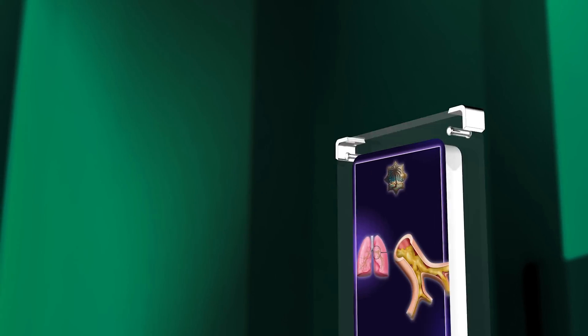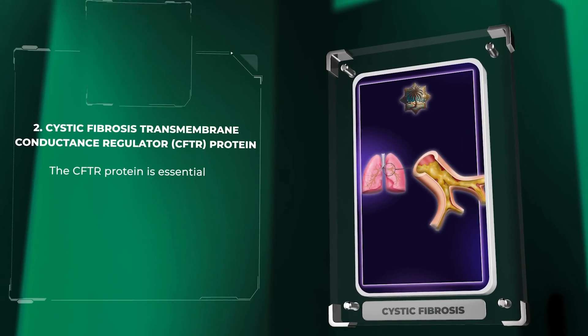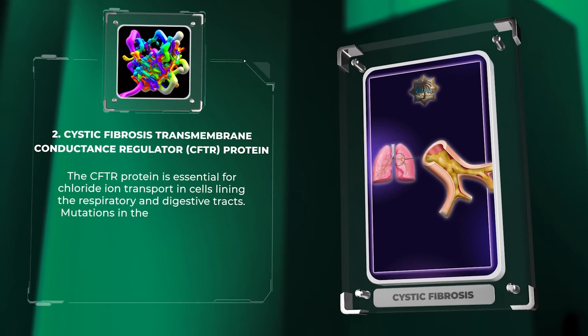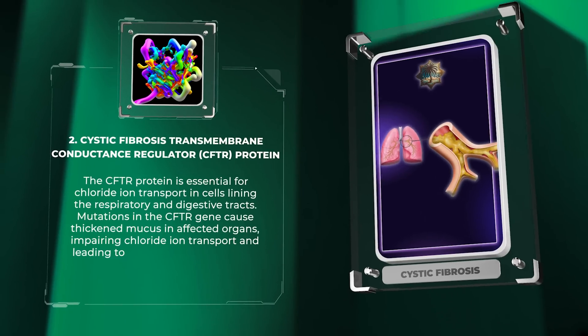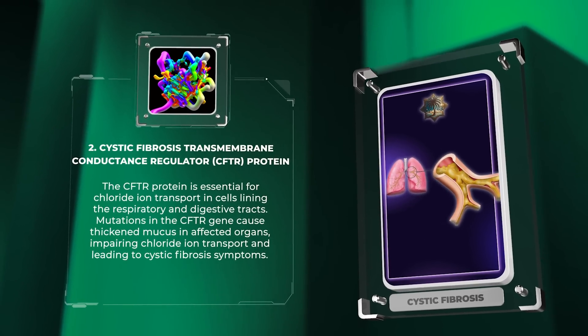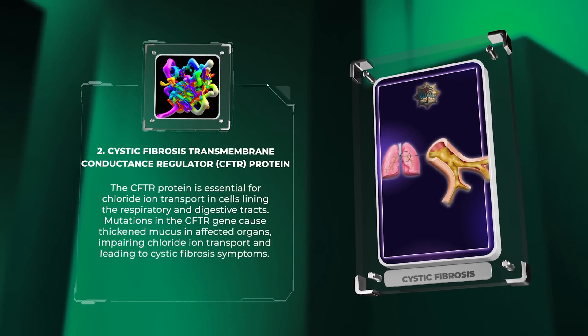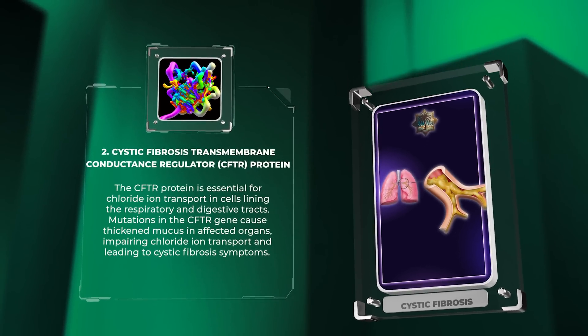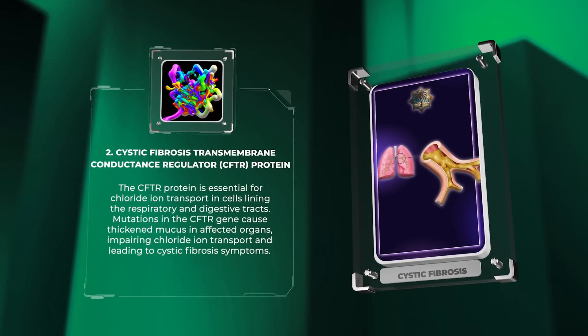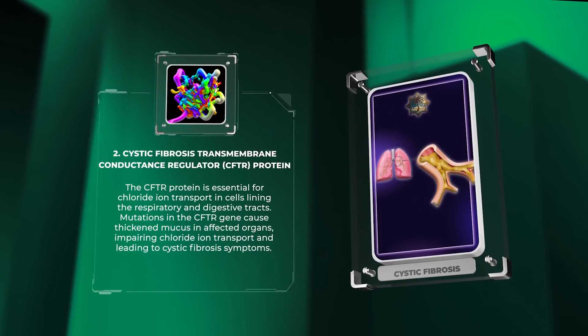The CFTR protein is essential for chloride ion transport in cells lining the respiratory and digestive tracts. Mutations in the CFTR gene cause thickened mucus in affected organs, impairing chloride ion transport and leading to cystic fibrosis symptoms.